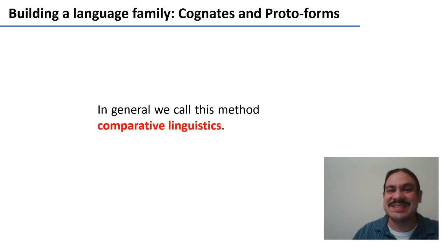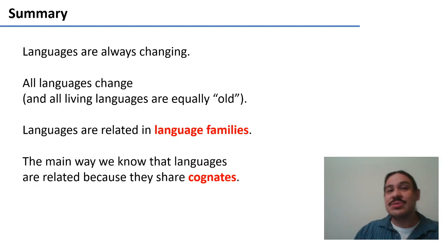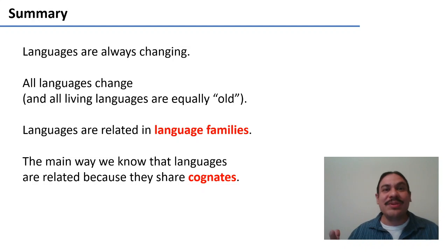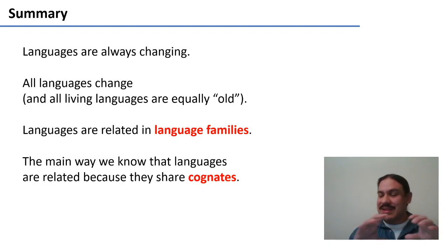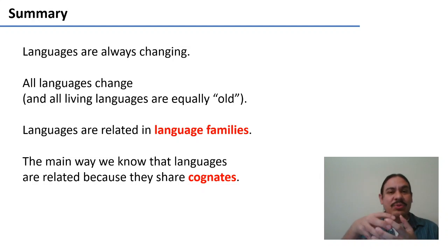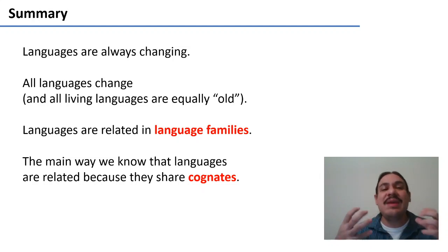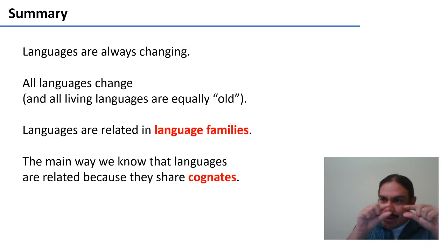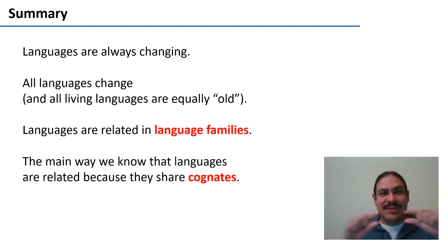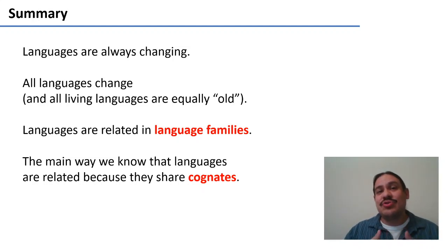As a quick summary: languages are always changing - it's natural, all living things change, and this happens to every single language, meaning every language we have today is equally old. Languages are clustered together in language families, and the main way we know they belong in the same cluster is because they share cognates - words that have regular, consistent similarities between them. We're going to use these principles to produce a tree, a clustered tree, of the Indo-European family.